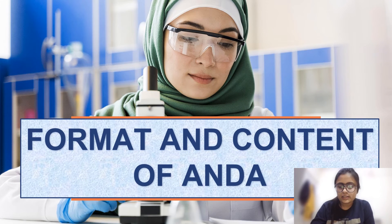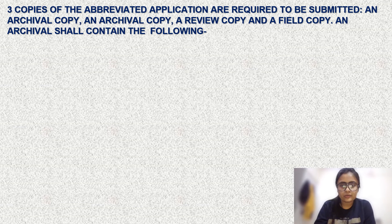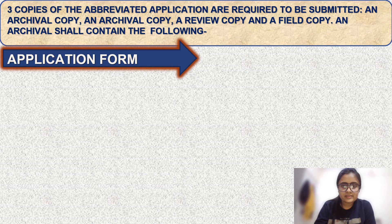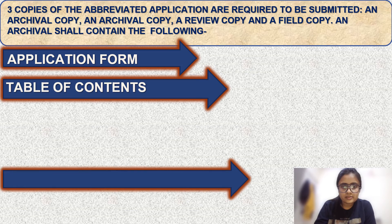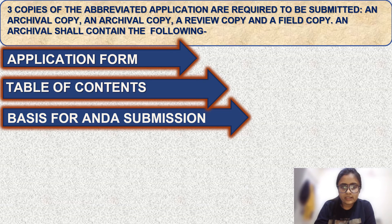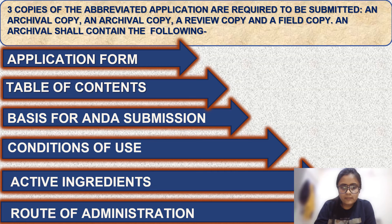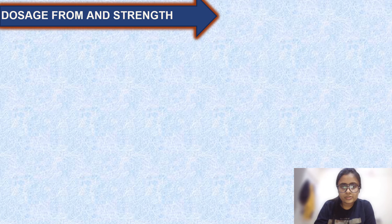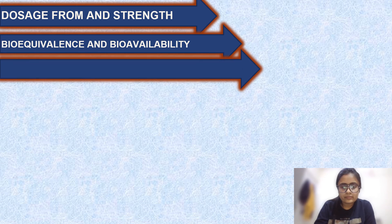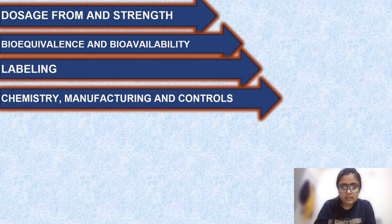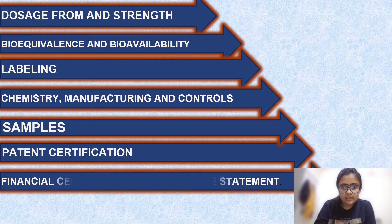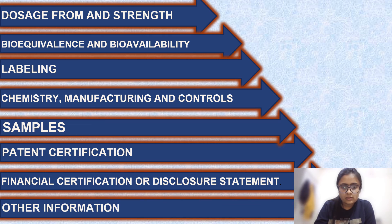The format and content of ANDA requires three copies to be submitted: an archival copy, a CPU copy, and a file copy. The archival copy shall contain: application form, table of contents, basis for ANDA submission, conditions of use, active ingredients, route of administration, dosage form, strength, bioequivalence and bioavailability, labeling, chemistry manufacturing and controls, samples, patent certifications, financial certification or disclosure statement, and other information.